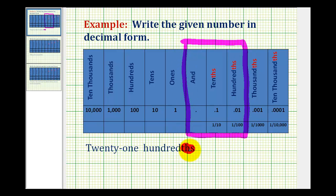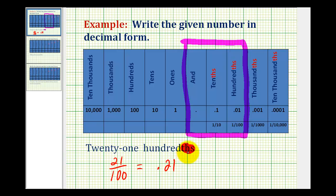The next thing that might be helpful is to write this as a fraction. 21 hundredths would be 21 over a denominator of 100, which in decimal form would have to be two digits to the right of the decimal, as we see here. So this would be 0.21, or 21 hundredths, sometimes written as 0.21. Having a zero in the ones place value does not change the value of the decimal.